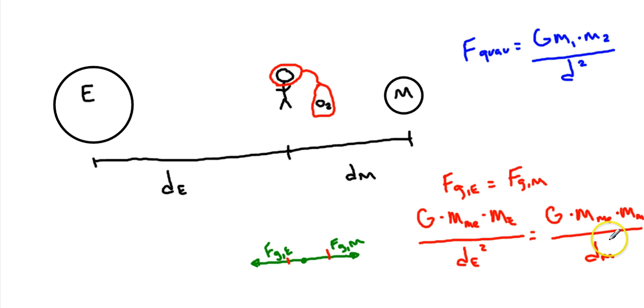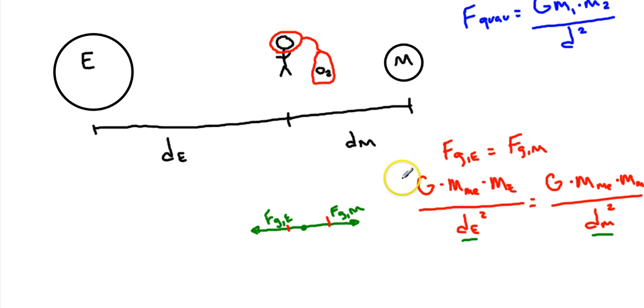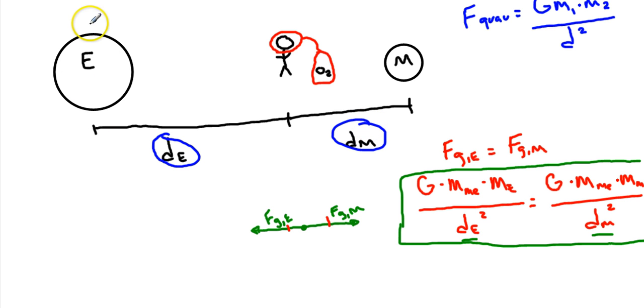But now the troublesome piece is that we have distance from the Earth that we don't know and distance from the Moon that we don't know, and we've only got this one equation. So we have to figure out a way that we can find out more information. We know luckily that the sum of this and this is equal to the total distance between the Earth and the Moon—the center of the Earth and center of the Moon.